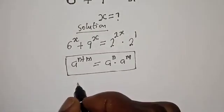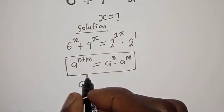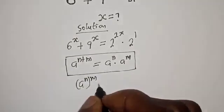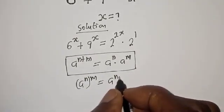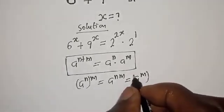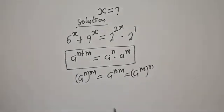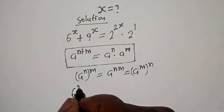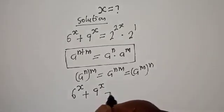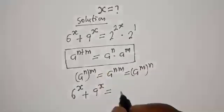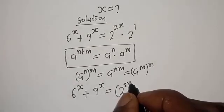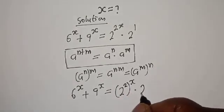Also, if you have a raised to power n to the power m, this equals a raised to power m to the power n. Then we have 6 raised to power s plus 9 raised to power s is equal to 2 raised to power 2, all to the power of s, multiplied by 2.